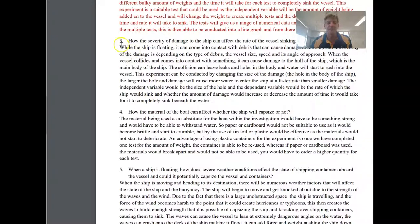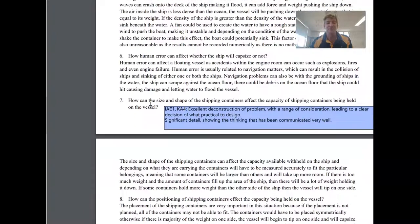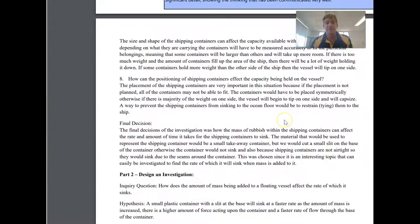So this is exactly the sort of thing that I'm looking for. You'll notice that some of the critiquing in the deconstruction is not quite as wordy. Lengthy is probably a better word than some of the others. However, it's all justified throughout here. So excellent deconstruction with a range of consideration leading to a clear decision of what practical to design. Significant detail. Totally agree. Showing the thing that has been communicative error. It's really good work, which is why it's been given an A. So this student has also gone through and they've actually chosen. Here's my final decision. Here's the justification of what I'm going to do and why I'm going to do it. They haven't just brainstormed and rolled the dice and picked one of them. They've actually made a decision about what's useful in a science classroom. So they have made it a logical design based on their critical deconstruction.